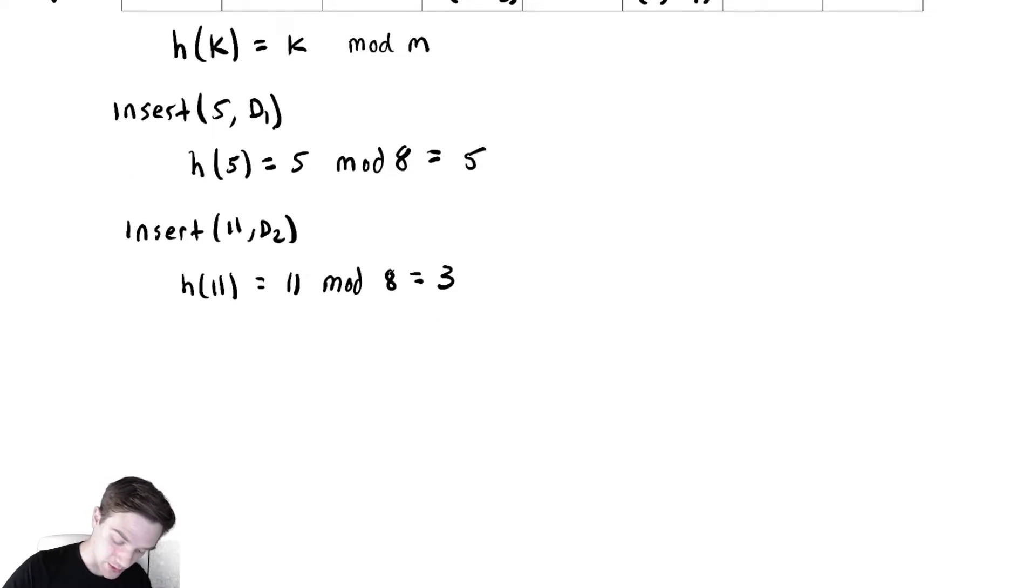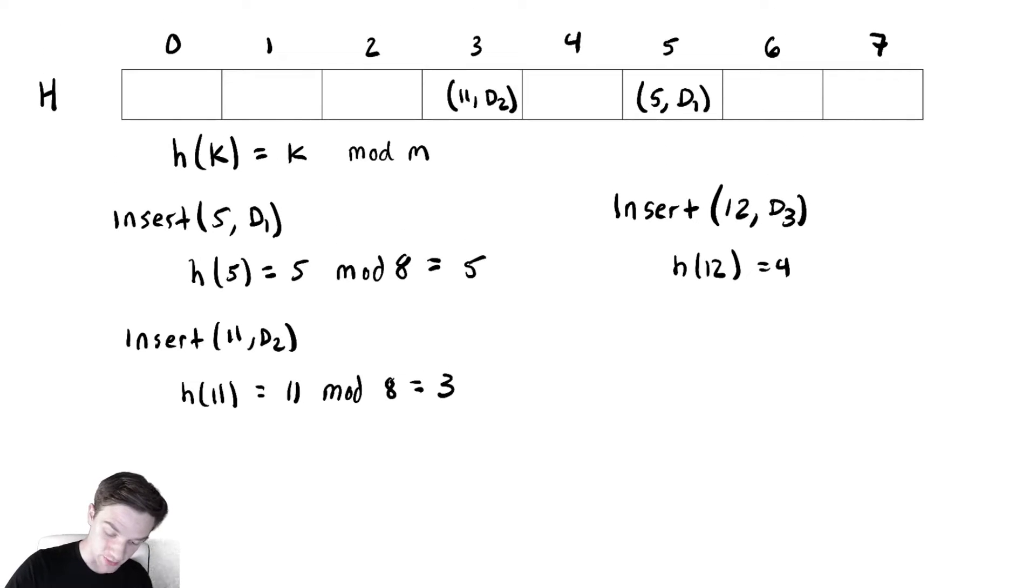Now let's suppose that we did an insert of 12 comma d3. This will give us h of 12, which is going to be one more than the previous one, so this will give me 4. So I get 12 comma d4.